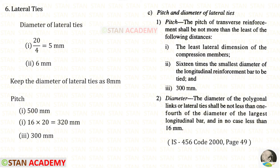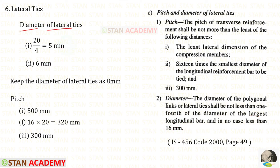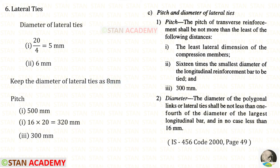Now let us design the lateral ties. Opening the codebook page number 49, the diameter of the lateral ties shall be not less than one-fourth of the diameter of the largest longitudinal bar. Our longitudinal bar diameter is 20 mm, so 20 divided by 4 gives 5 millimeter, and in no case less than 6 millimeter. So the diameter of lateral ties should not be less than 6 mm. Let us keep the diameter of lateral ties as 8 millimeter.